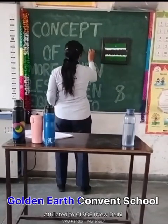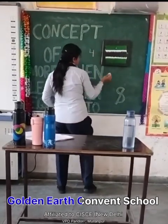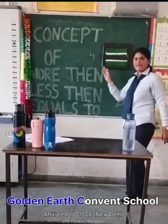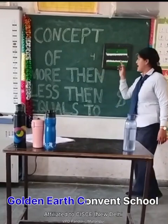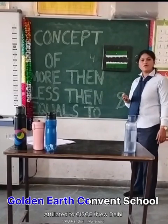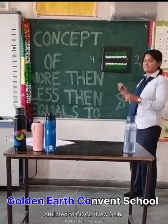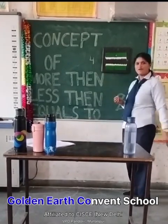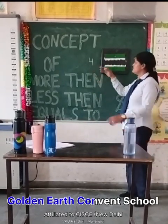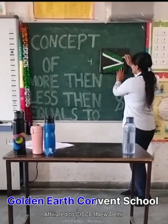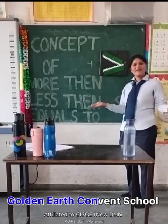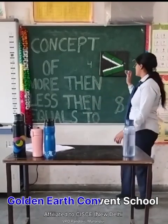Here I have four numbers and here I have two numbers. The crocodile opens his mouth — where is the big number? Four is the big number. So the crocodile opens his mouth toward four.